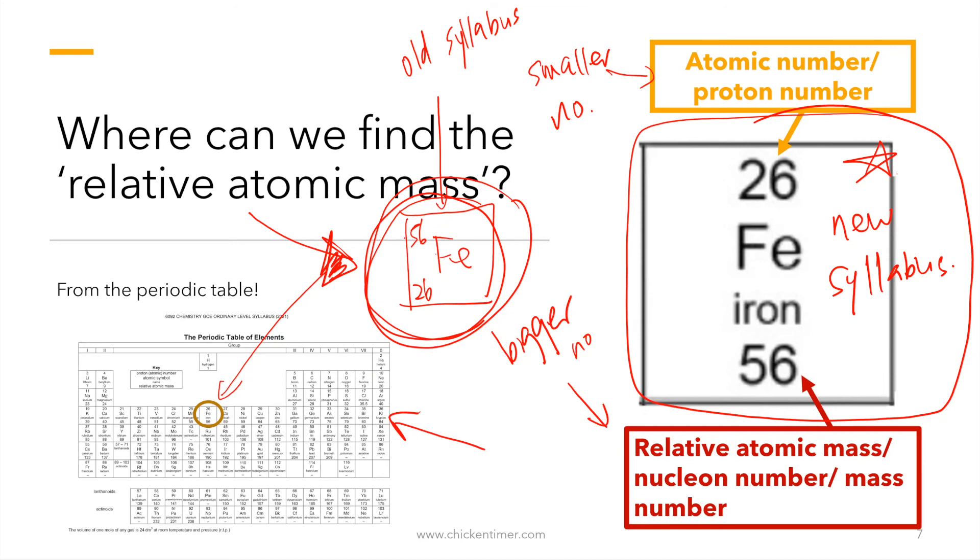So I have to tell you this because if you look at your ten years series, you may come across certain questions where the mass number or atomic mass is on top. Then they may get the O-levels periodic table. No, no. Now exam, you won't get the old periodic table. But I'm just telling you that in case you see a question that is quite old and you will see that the mass number will be on top. So then don't be surprised or say that there is printing error because in the past it was like that. Don't be surprised.